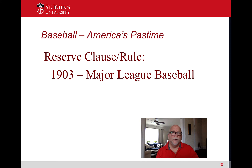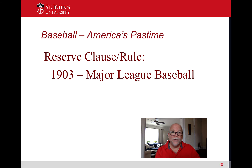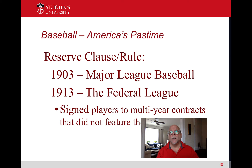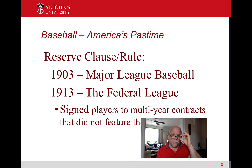This was going along very well because it kept player salaries artificially low. If you don't have anyone to negotiate with, you play with what's offered — you have no leverage to go anywhere else. This continued until around 1912 or 1913, when another professional baseball league appeared: the Federal League. They wanted to be a major powerhouse, so they needed the best players. The Federal League's ownership agreed to sign players to multi-year contracts and agreed not to put the reserve clause in contracts.